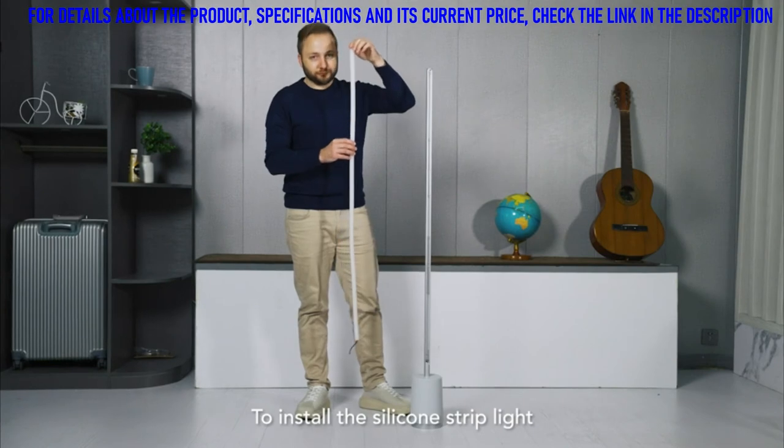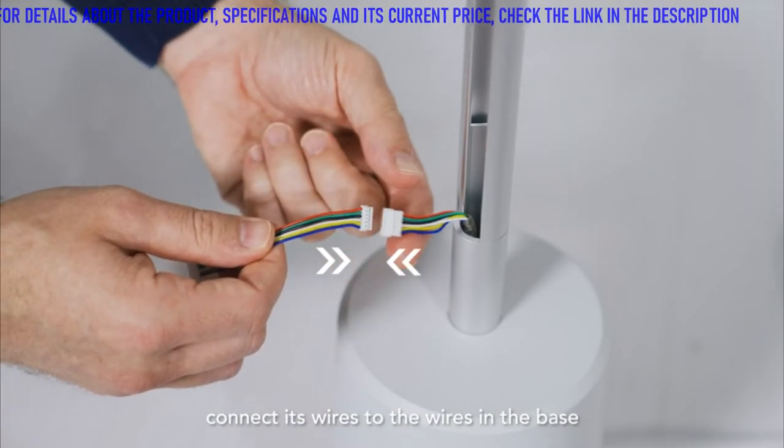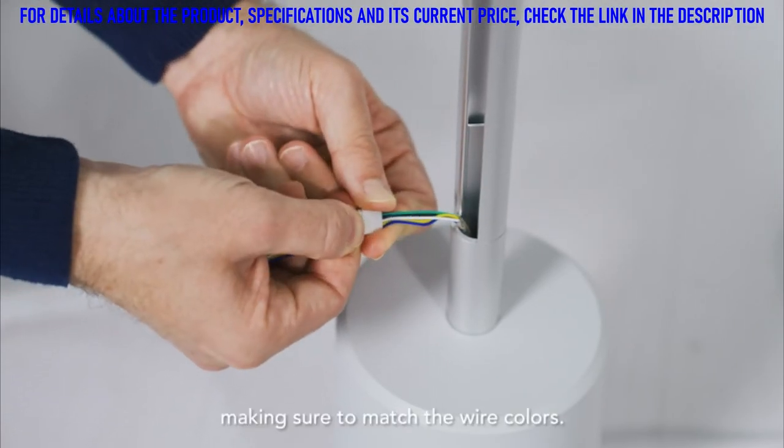To install the silicon strip light, connect its wires to the wires in the base, making sure to match the wire colors.